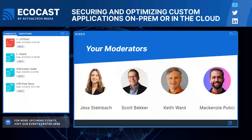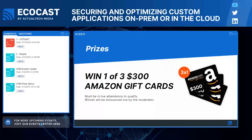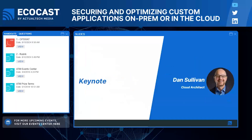As always on our Ecocast, it's not just awesome content you get, but you get some great prizes too. Today that includes three $300 Amazon gift cards, so three of you are going to go out of here today a little bit richer. I am ready to start this off with a discussion with my good friend Dan Sullivan. Dan is a very experienced cloud architect and author, and we are lucky to have him with us to discuss ways to secure and optimize custom apps in the modern era.